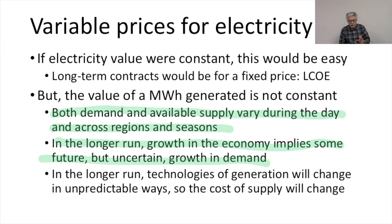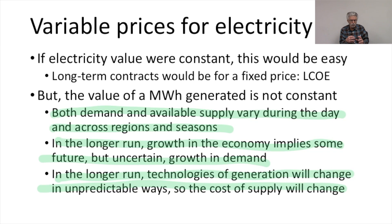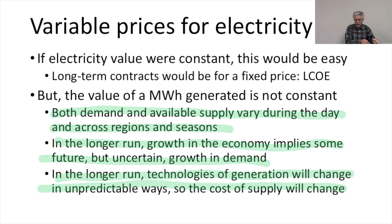A third factor we'll need to consider is the change in technology over time. In the long run, the technology of generation will change in very unpredictable ways, and that will mean the cost of supply will change. The advent of much less expensive renewables has changed the prospects for future profitability of large fossil baseload power plants, and the advent of batteries changes in interesting ways the value of baseload plants and the value of renewable plants.